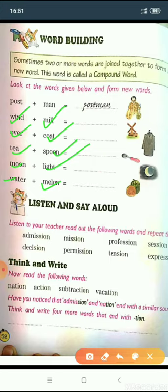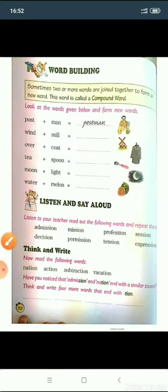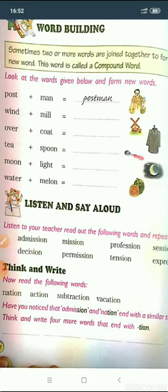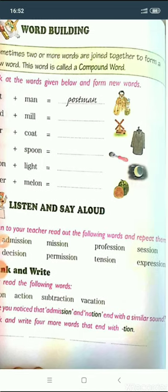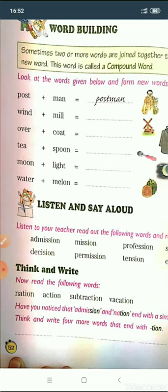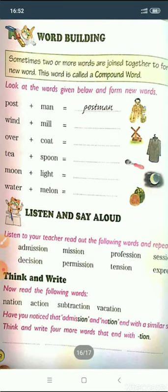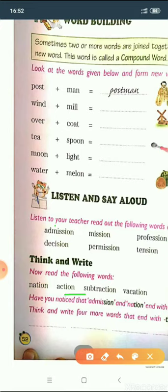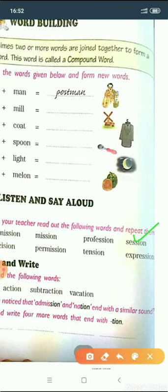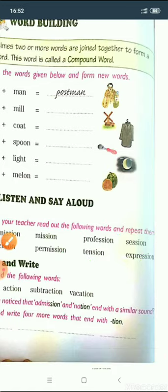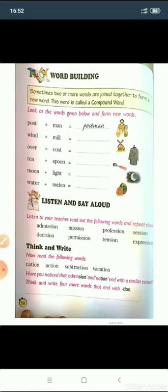Now next is listen and say aloud. Listen to your teacher, read out the following words and repeat. Admission, mission, profession, session, decision, permission, tension, expression. As you have noticed, all these words have the 'shun' sound — admission, mission, profession, session, decision, permission, tension, expression.